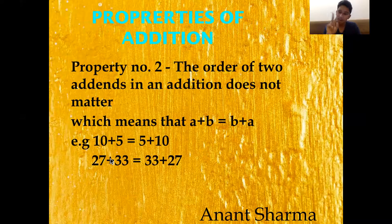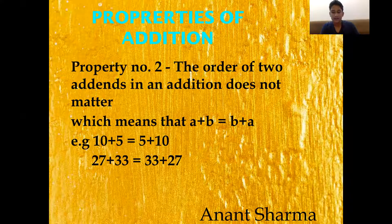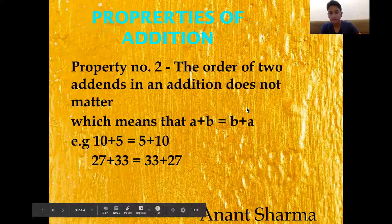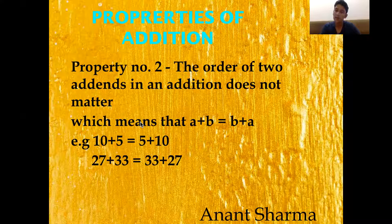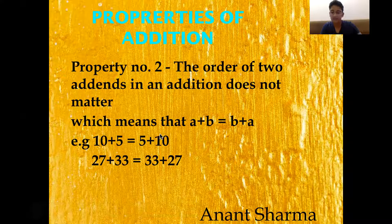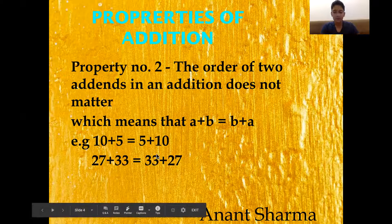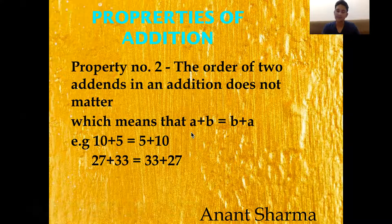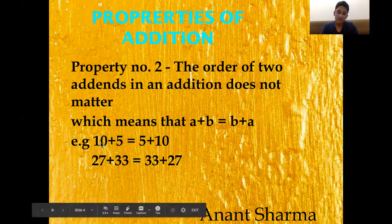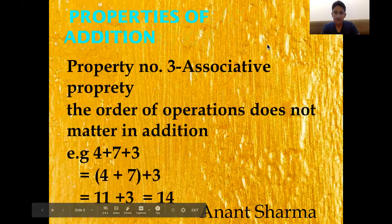Property number 2 is the Commutative Property: the order of addends does not matter in addition, meaning a plus b equals b plus a. For example, 10 plus 5 equals 15, and if we flip it, 5 plus 10 also equals 15. Similarly, 27 plus 33 equals 60 and 33 plus 27 also equals 60. The numbers being added are called addends.